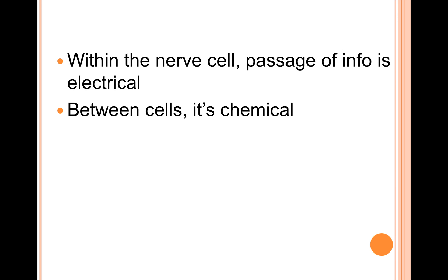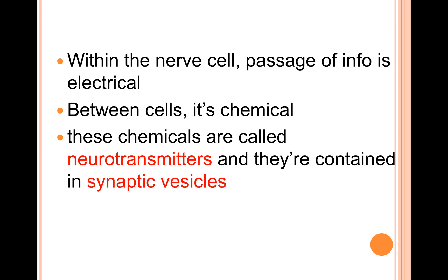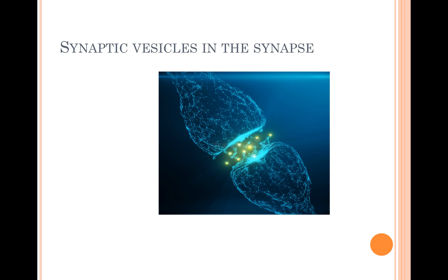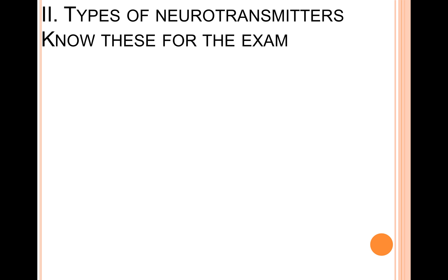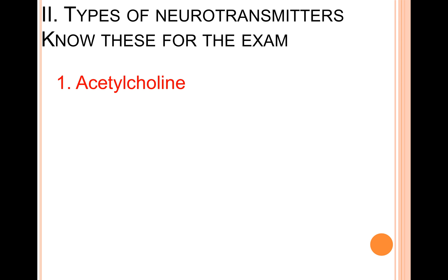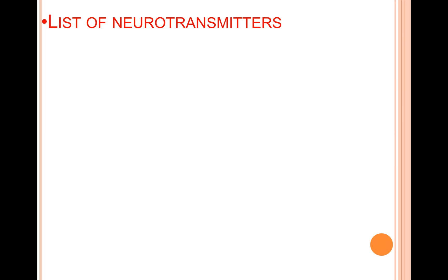Within the nerve cell, passage of information is electrical, but between cells it's chemical. These chemical messengers are called neurotransmitters, and they're contained in synaptic vesicles. The vesicles are like little bubbles of chemicals released in the space between neurons — the synapse. Some types of neurotransmitters important to know for the exam include acetylcholine, serotonin, endorphins, and dopamine.